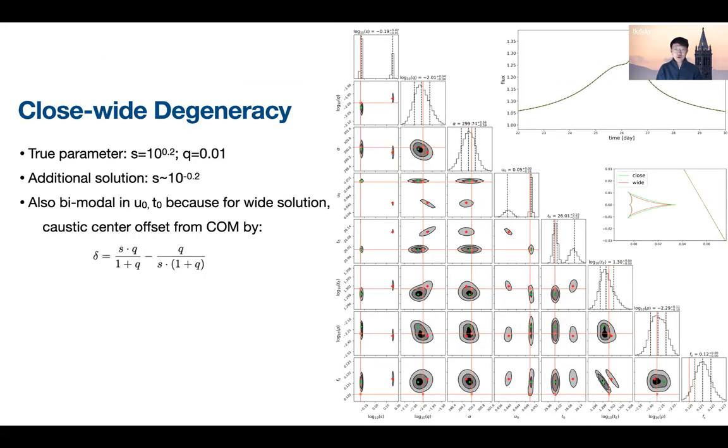Here is a central caustic passing event which shows a classic closed wide degeneracy where a wide configuration with binary separation s can result in a very similar light curve compared to a closed configuration with binary separation 1 over s. Apart from the s and 1 over s behavior, we notice that u0, t0, and te, which are parameters of the trajectory, also exhibit bimodality.